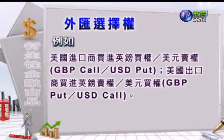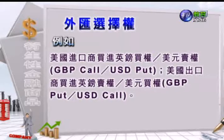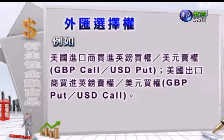也就是说买方有权利选择到底是不是要履约。因为通货交易是一种货币买卖对另外一种货币，所以美国进口商是买英镑卖美元的话，它就是买进英镑买权然后美元卖权；美国的出口商等于是卖英镑然后买美元，所以它就会买进英镑的卖权然后美元的买权。以下我们用费城股票交易所的标准化外汇选择权契约来带大家了解这一项商品。